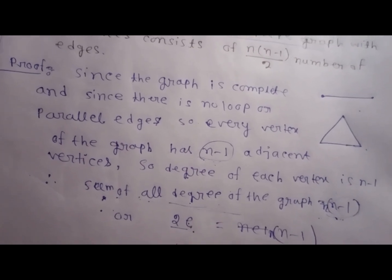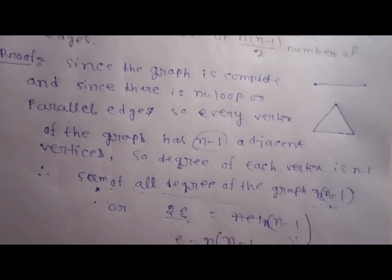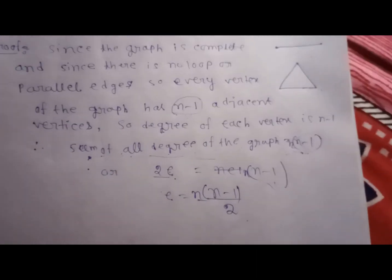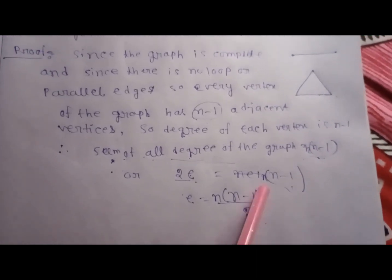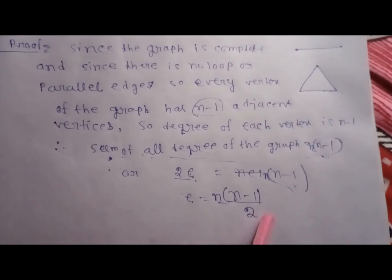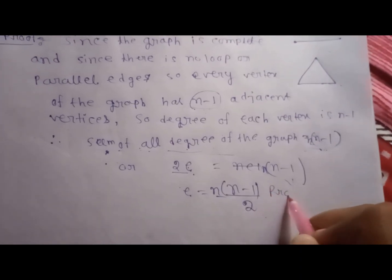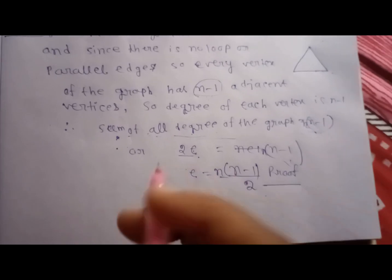Therefore e is equal to n into n minus 1 by 2. So our required proof is this. Now take an example.